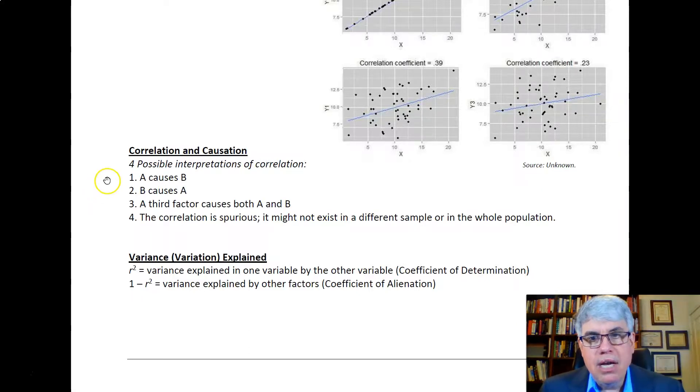Another important concept is the variance or the variation that's explained by r squared. If we have, say, r equals 0.4, a pretty moderate relationship, stronger than a lot of psychological relationships, r squared would be 0.4 times 0.4 equals 0.16 or 16 percent.